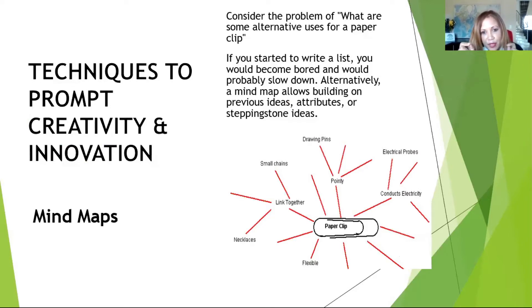A paperclip is pointy, so it could possibly be used as a drawing pin. It's got points and you can use it as a drawing pin. It has links and it links together, so you could use it as small chains. And you could be making a necklace out of those small chains.